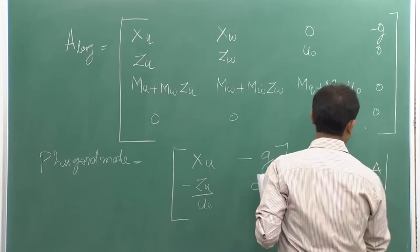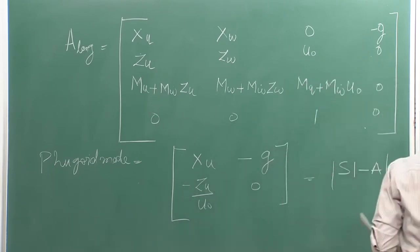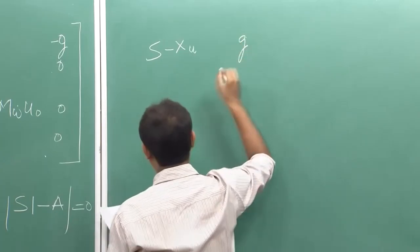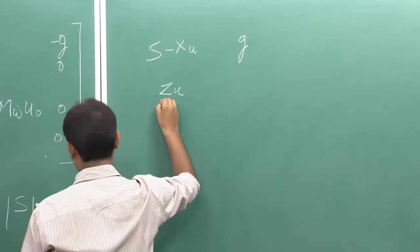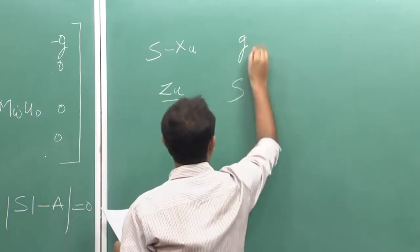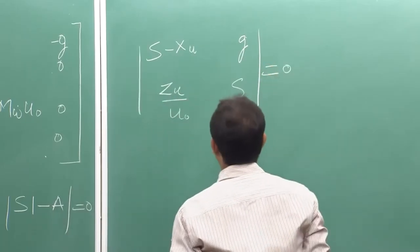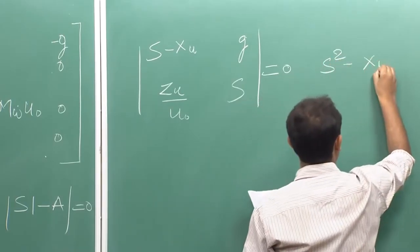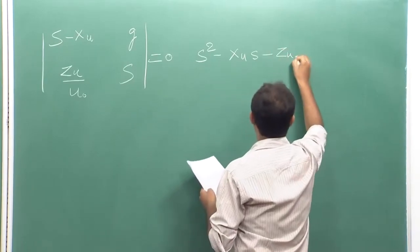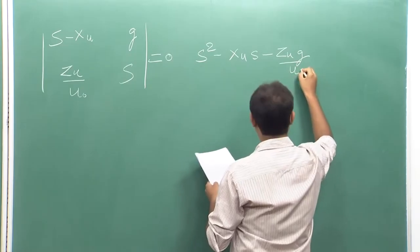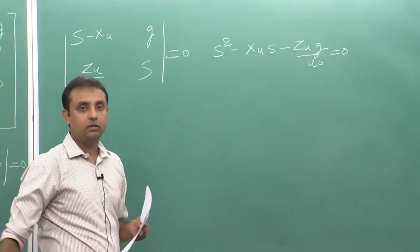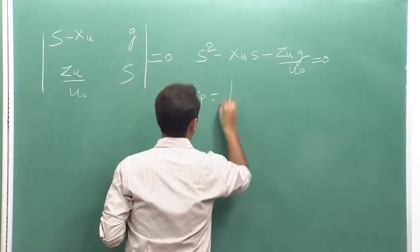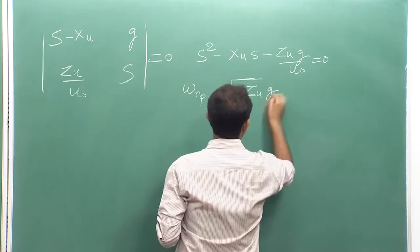The characteristic equation for this fugoid mode will be det(sI minus A) equals 0. Equating this matrix we get the characteristic equation as s² minus x_u·s minus z_u·g upon u_naught equals 0. From this characteristic equation we can see that the natural frequency for fugoid mode will be the square root of minus z_u·g upon u_naught.